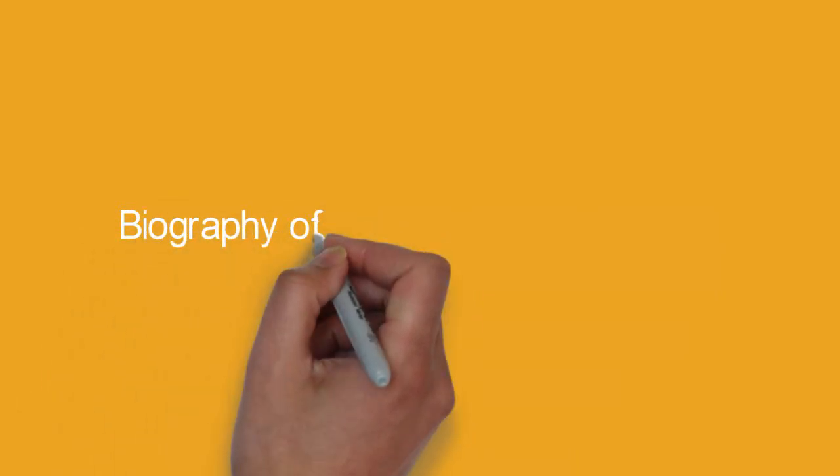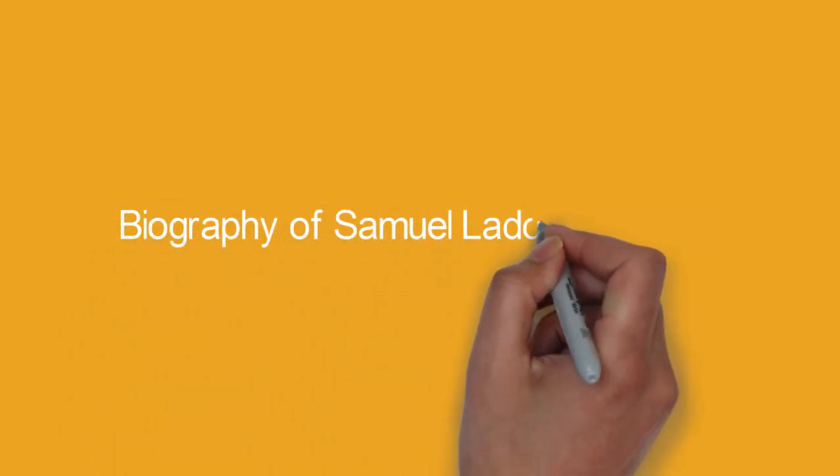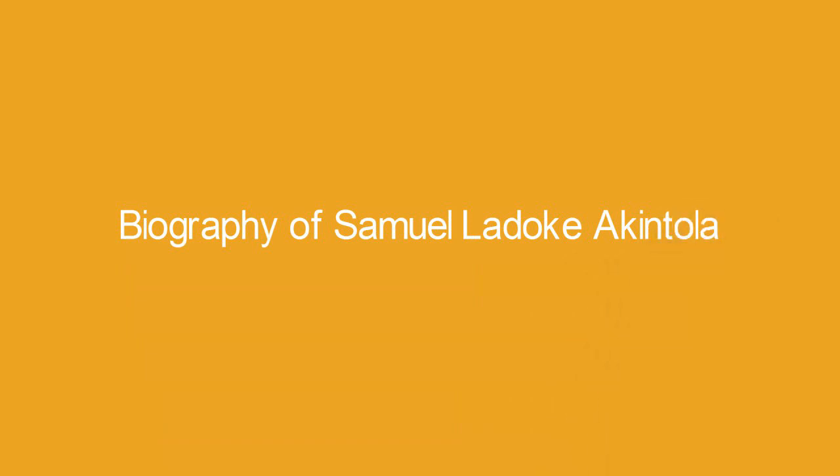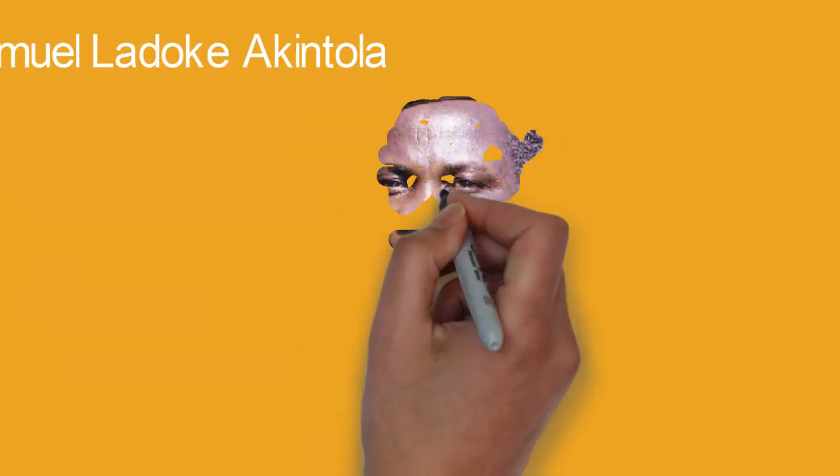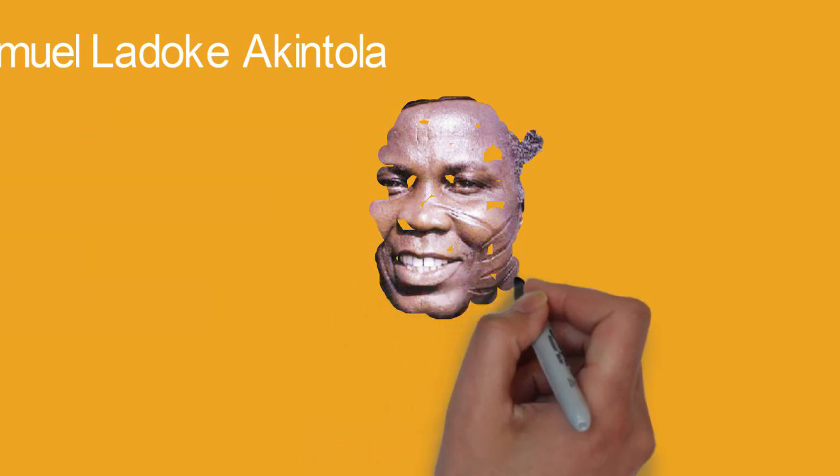Biography of Samuel Ladoke Akintola. Chief Samuel Ladoke Akintola, also known as SLA, was born on the 6th of July 1910 and died on January 15, 1966.